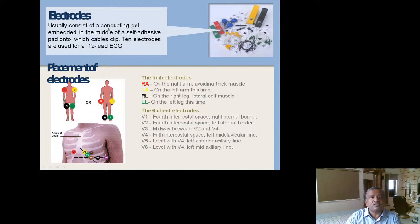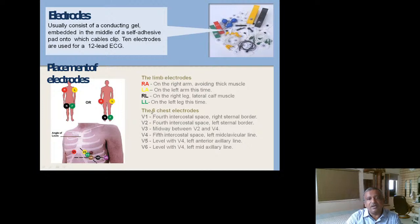Electrodes consist of a conducting gel embedded in a self-adhesive pad with clip-like, sticker, or ball-type attachments. There is universal color coding: right arm is red, left arm is yellow, right leg is black, and left leg is green. This color coding is universal across the globe.